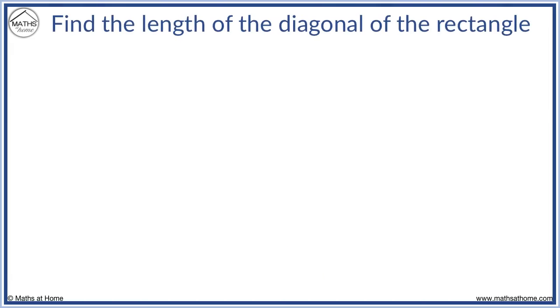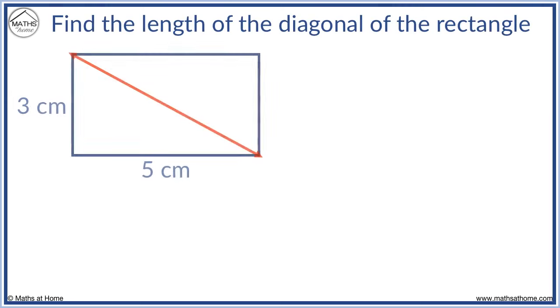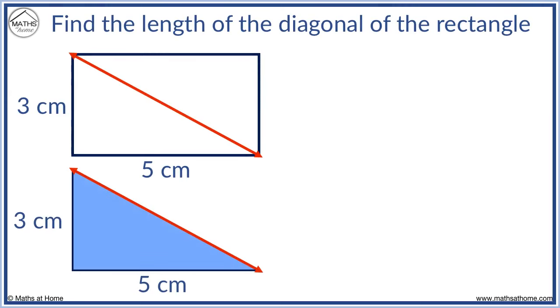For example, find the length of this diagonal. We first split the rectangle into a right-angled triangle. The height is still 3 and the base is 5. We find the diagonal using Pythagoras.